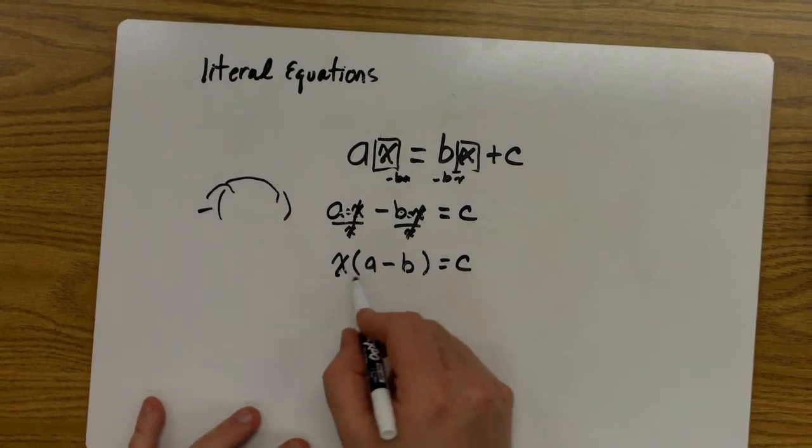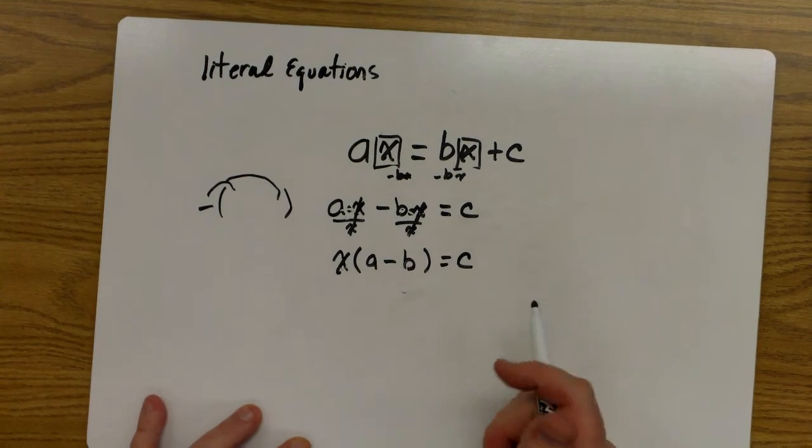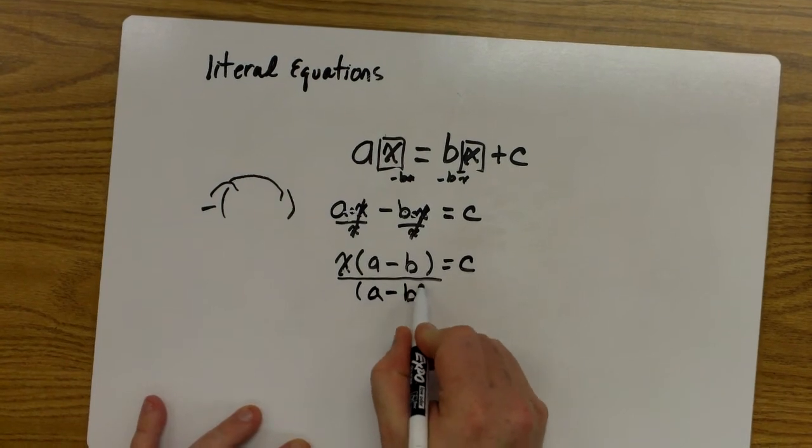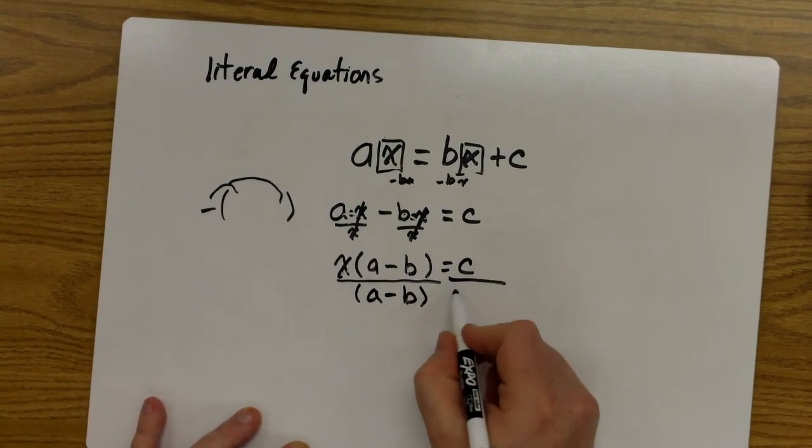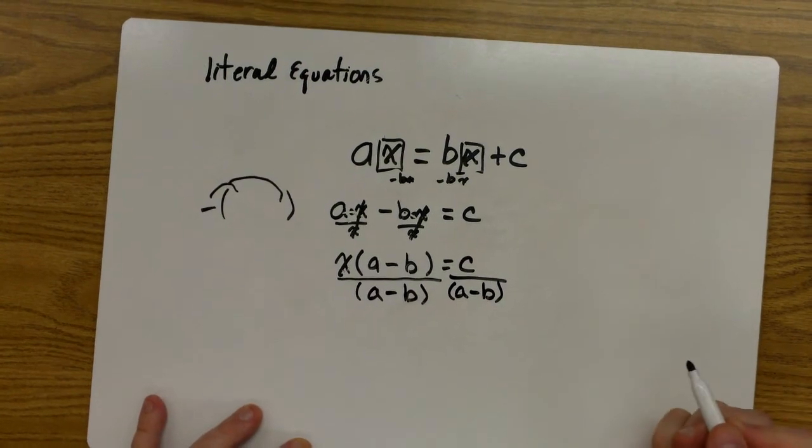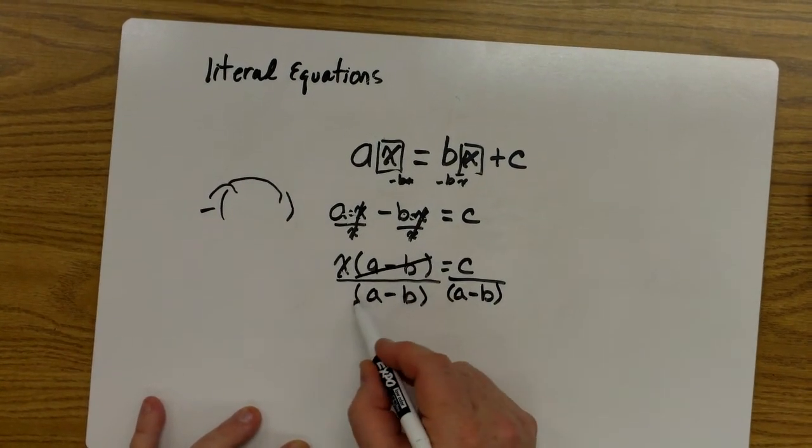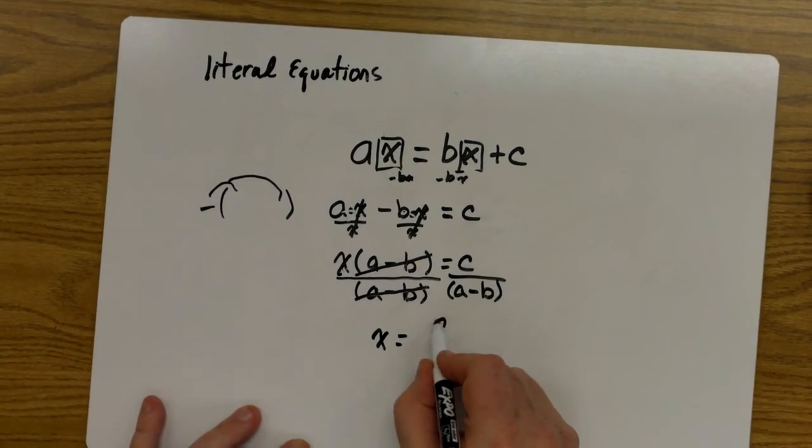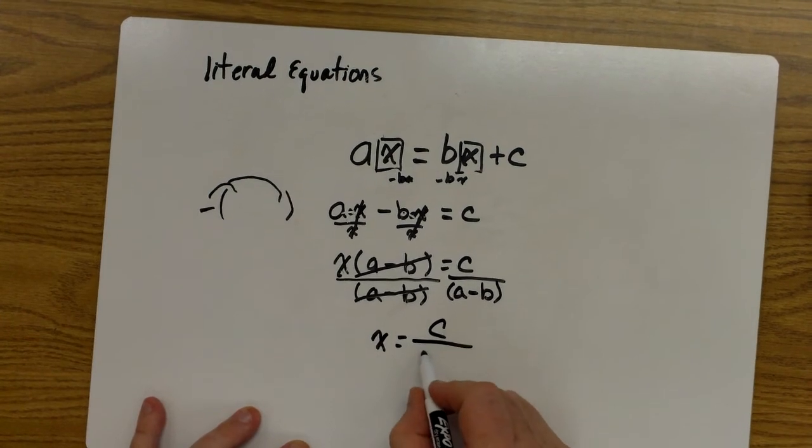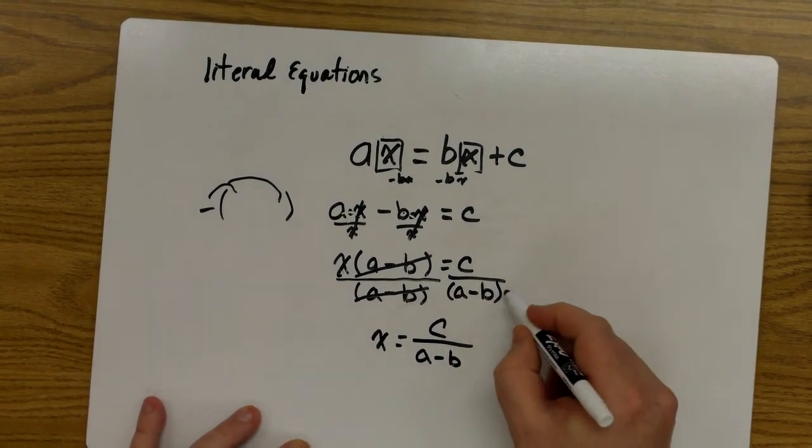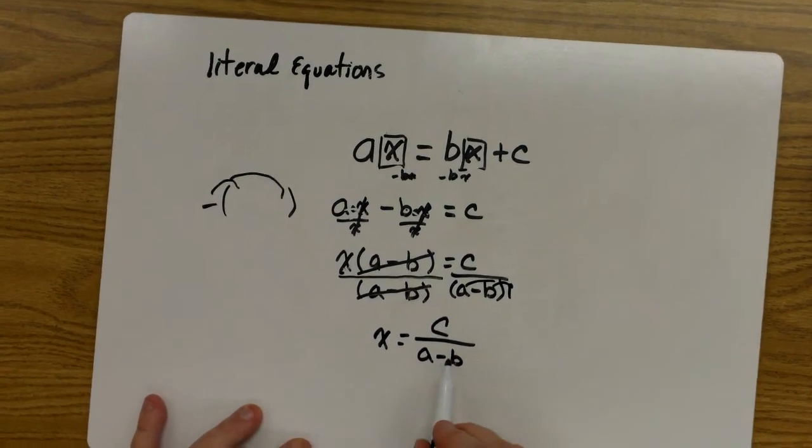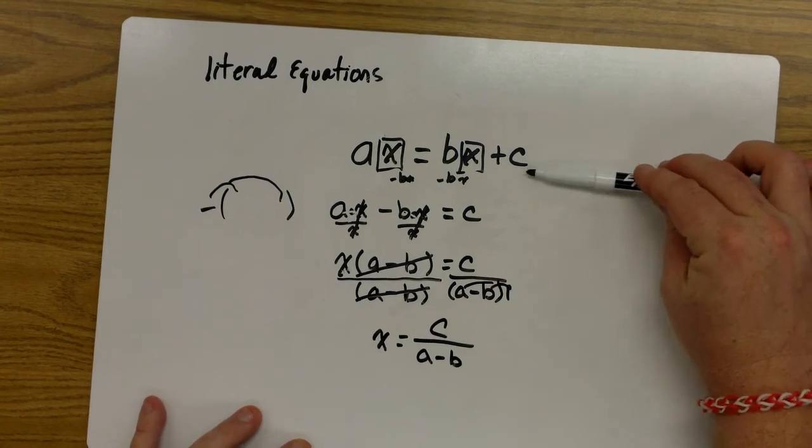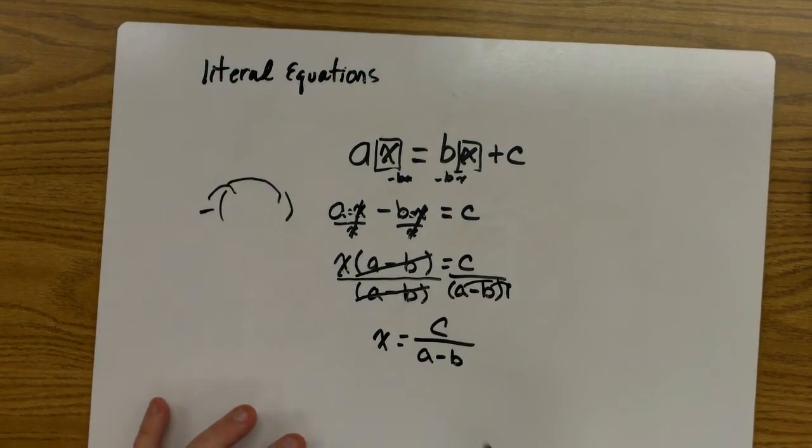Now, since this is X times this entire expression, to get X by itself, we're going to divide by that entire expression of A minus B. And we're going to go to the other side and divide by A minus B. Well, A minus B over A minus B becomes 1, and 1 times X is just X. And on the right-hand side, I still have C over A minus B. Since there's a 1 out here, and I distribute a 1, it doesn't change anything. I can just drop the parentheses. So starting at the original problem, solve them for X. X then would equal C divided by A minus B.